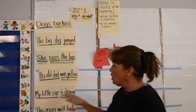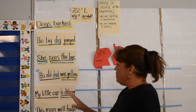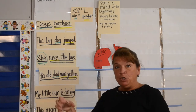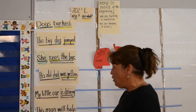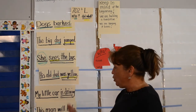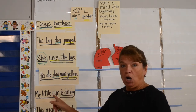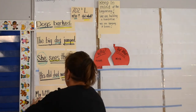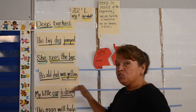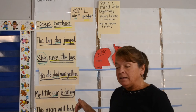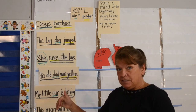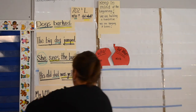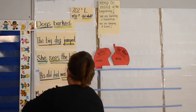My little car is driving. The noun in the complete who is 'car,' so we underline car with green. Is driving — 'is' is a verb and 'driving' is a verb, so we have to underline both yellow.